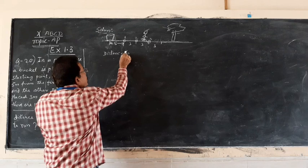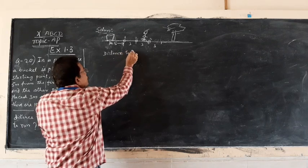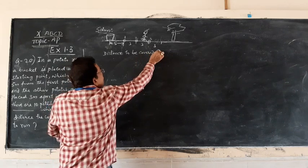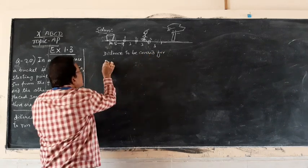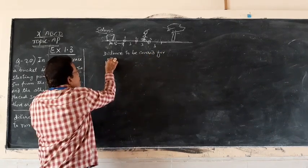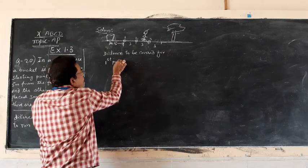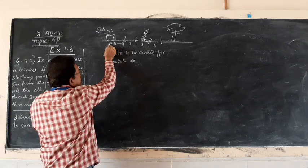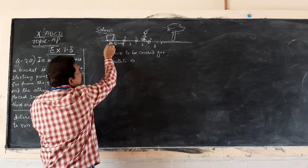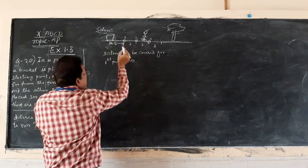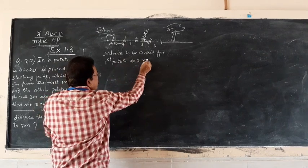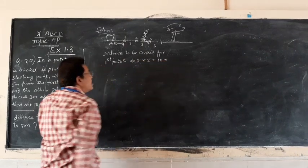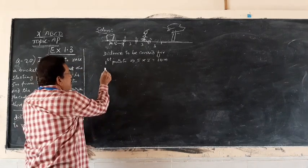Distance to be covered for the first potato: 5 meters for putting the potato in the bucket and 5 meters for returning, so 5 into 2, that is the competitor has to cover 10 meters.